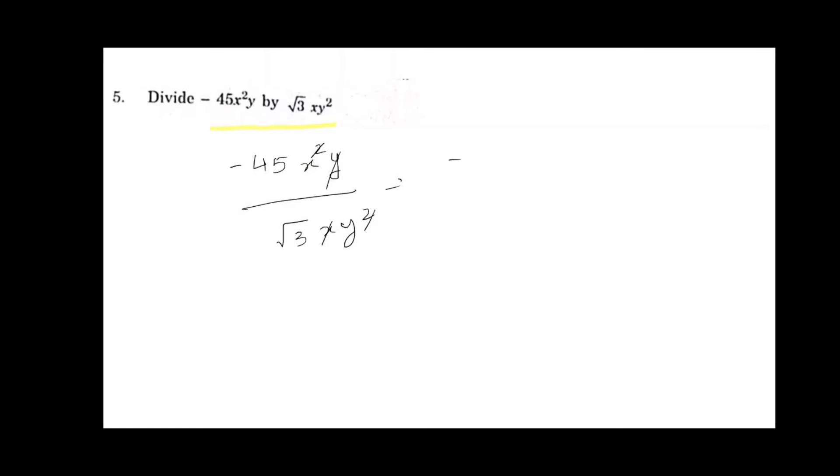Now 45, as root 3 is in the denominator, we have to write as 15 into root 3 into root 3. As we know that any number a is written as root a into root a.